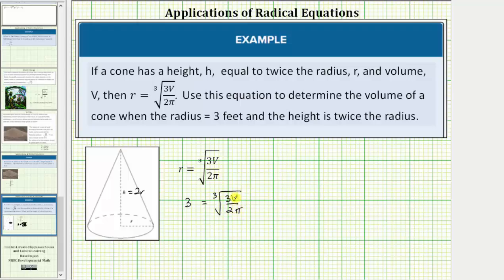Now we need to solve this equation for v. Because the radical is already isolated on one side of the equation, the next step is to raise both sides of the equation to the power of the index, which means we cube both sides of the equation.